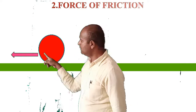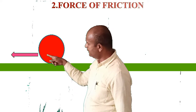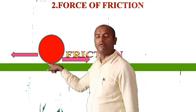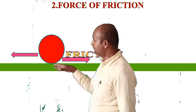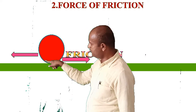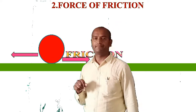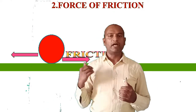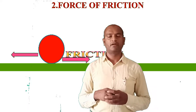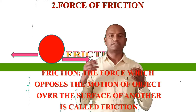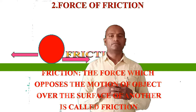If the ball moves in one direction, the force between the surface of the ball and the ground acts in the opposite direction — this force is called the force of friction. By observing this activity, we define the force of friction as the force which opposes the motion of a body over the surface of another. We have now completed two types of forces: muscular force and force of friction.